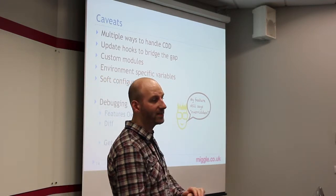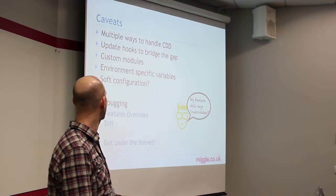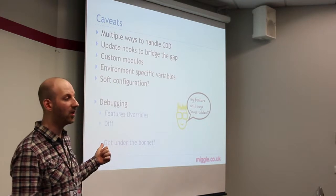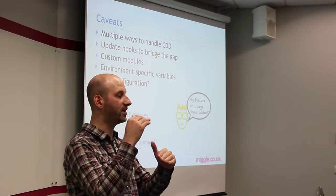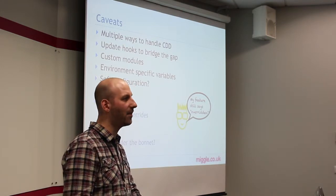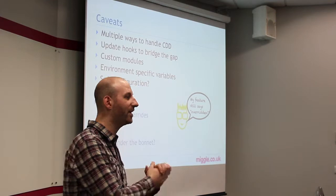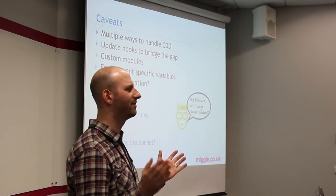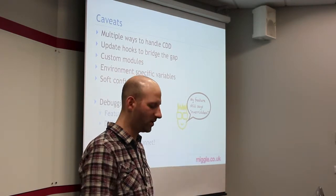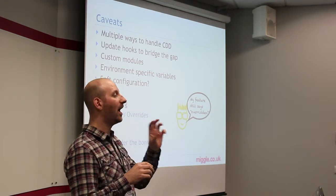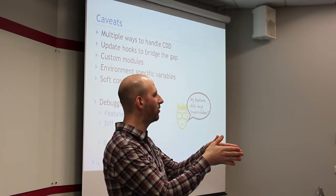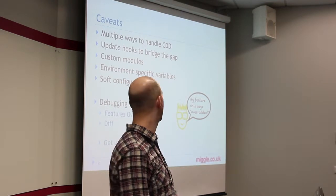From a debugging perspective, there are a couple of modules which we use — features overrides — and that will clearly give you an example in the UI of what specific things have been changed. One thing that sometimes happens, and I'm sure you've all seen this, is features say that they're overridden but actually they're not overridden. There's a value that seems to flip between the two. So it's worth having a module like features overrides to go in and inspect that and see whether it's actually worth worrying about.